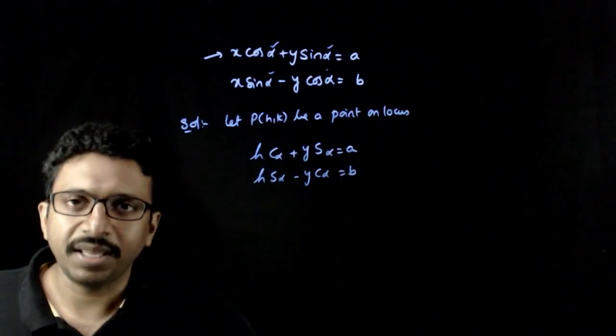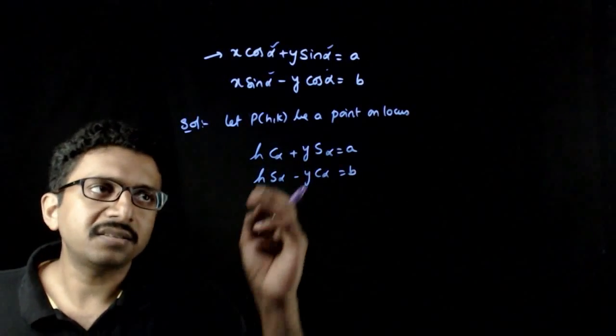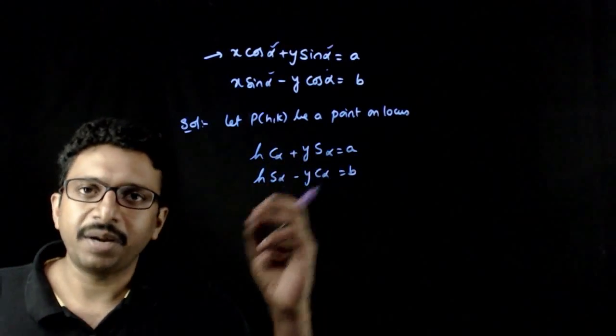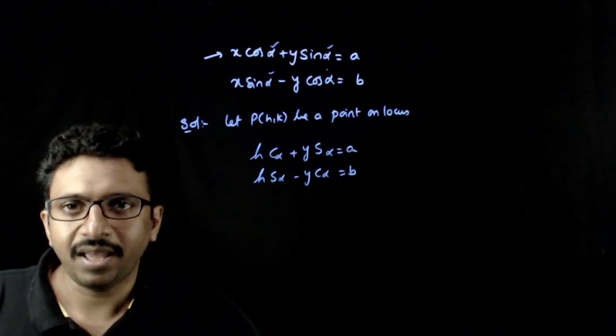Now if you have these two lines, from these two lines, just need to eliminate the parameter to get the locus of h, k.